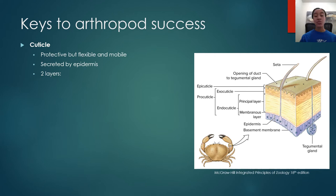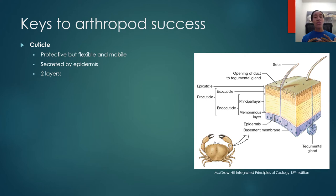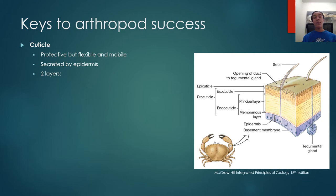The cuticle provides protection from physical and environmental threats and is flexible at joints and sutures to allow movement while still protecting the organism. It's almost like they're constantly walking around in a suit of armor. Unless they've just molted, they constantly have that protection. Even after molting, when they're most vulnerable, they will make a new cuticle as soon as possible, spending as little time as possible being vulnerable to predators and environmental stresses.